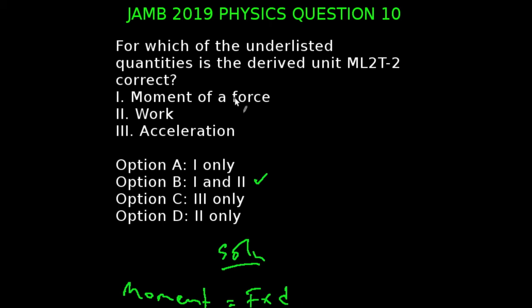JAM 2019 physics, question number 10. For which of the underlisted quantities is the derived unit equal to M L raised to the power 2 T raised to the power minus 2? That is, mass, length, and time. The correct answer to this question is option B, which is I and II. That is, moment of a force and work. How true is this?